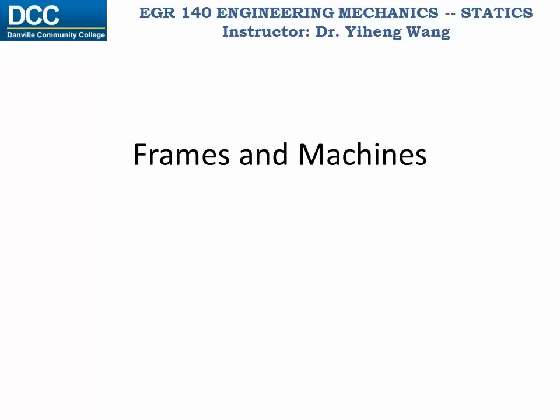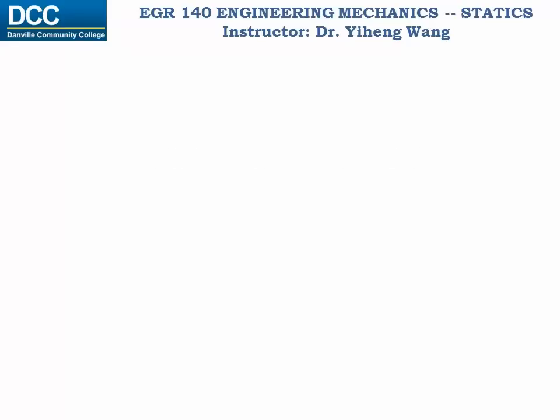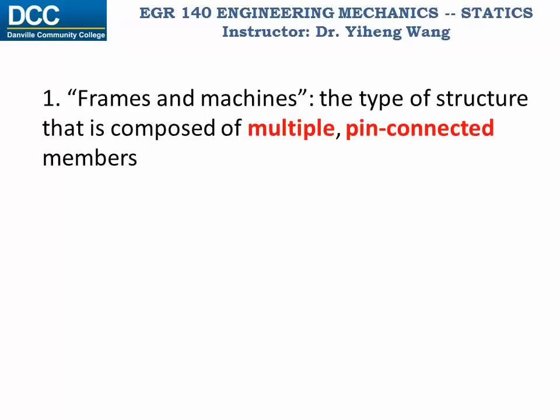In this video I will use three examples to demonstrate the general approach for force and moment analysis for the structures of frames and machines. The general term frames and machines refers to the type of structure that is composed of multiple pin-connected members, and each of these members is usually subjected to multiple forces and moments. Therefore, in terms of static equilibrium, frames and machines can be more difficult to analyze than the truss structures learned previously.